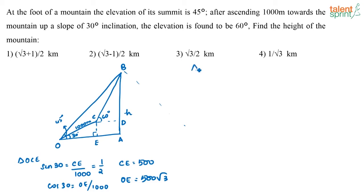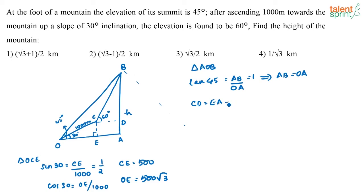Now consider triangle AOB. Tan 45 equals AB by OA, and since tan 45 = 1, we get AB equals OA. Looking at the rectangle, CD equals EA, which equals OA minus OE. Since OA equals AB equals h, CD equals h minus OE. Since OE equals 500√3, CD equals h minus 500√3.